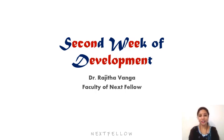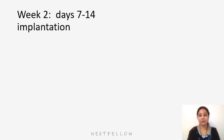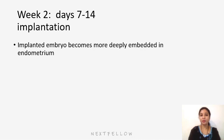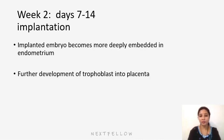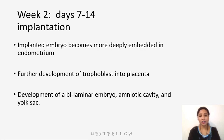Hello everyone, let us continue the embryology with the second week of development. The main events which happen during the second week are the implantation, which begins on the sixth to seventh day of intrauterine life and is completed before the 13th to 14th day of gestation. We will also see the development of the trophoblast into placenta, the development of the bilaminar embryo, amniotic cavity, and yolk sac. The embryoblast cells differentiate into two layers: epiblast and hypoblast.